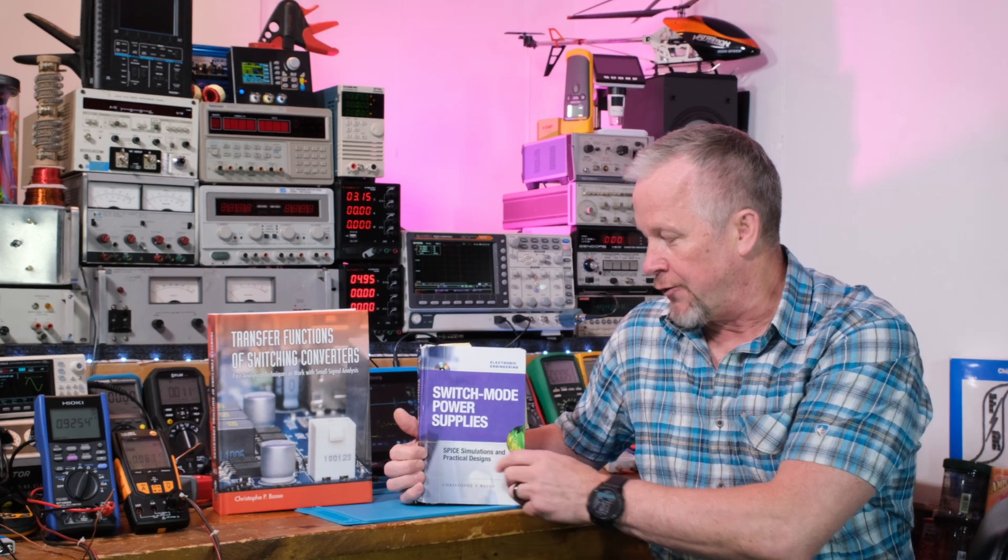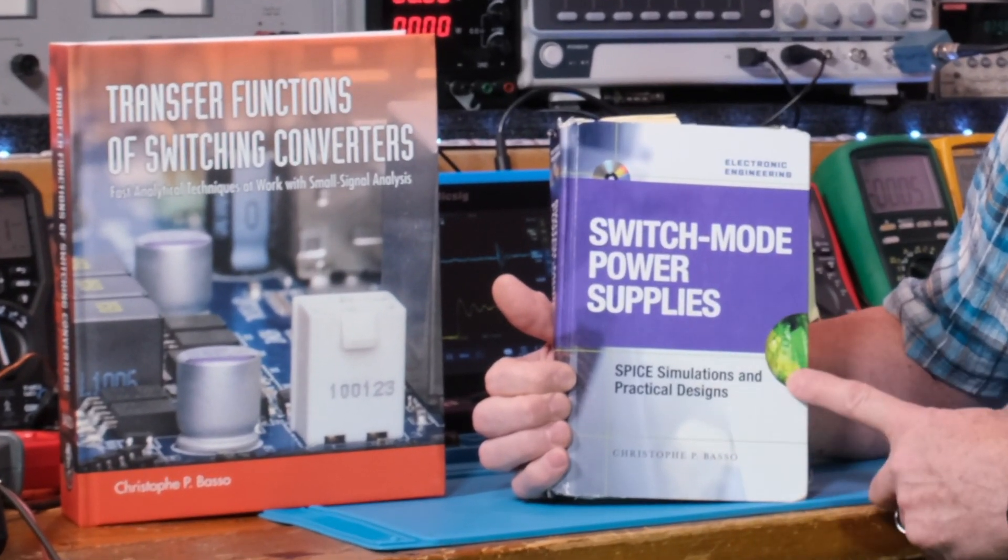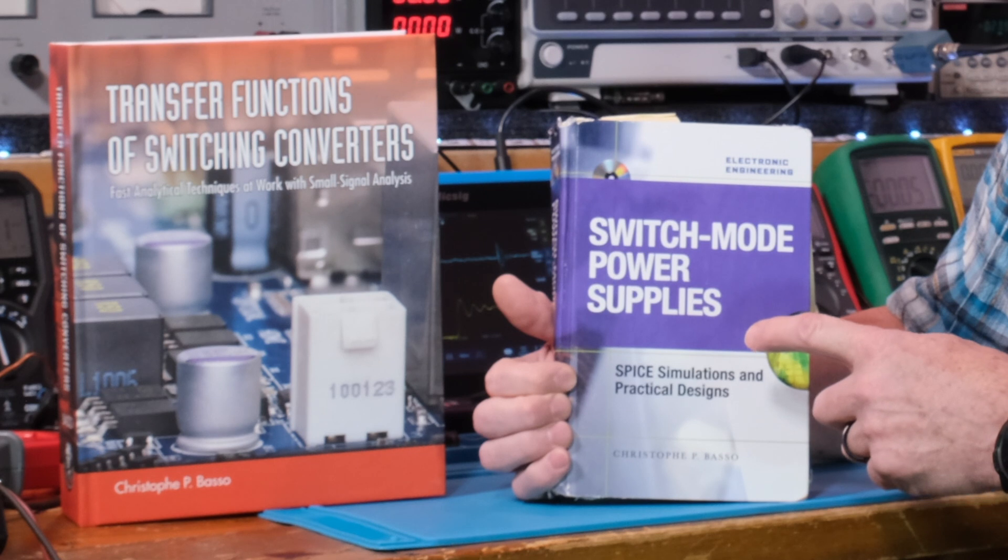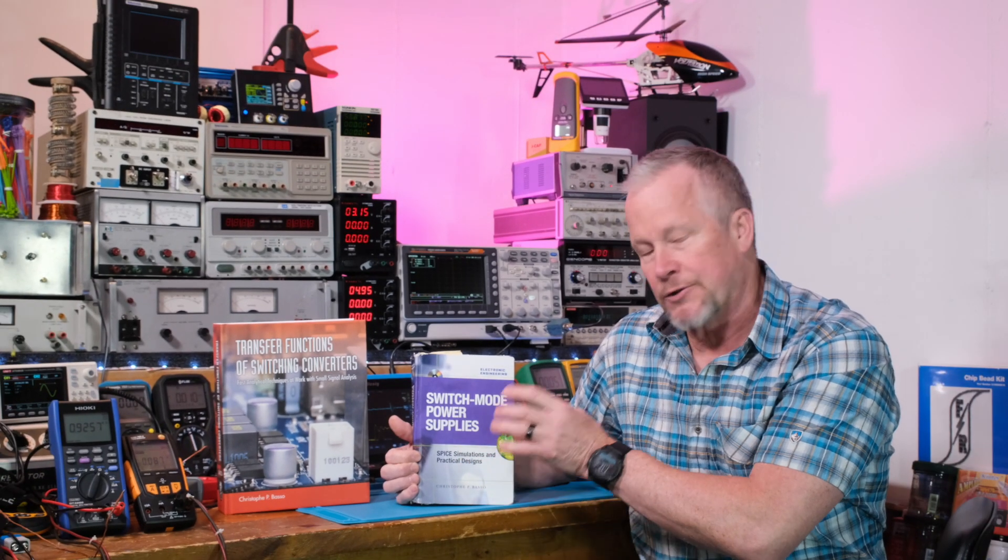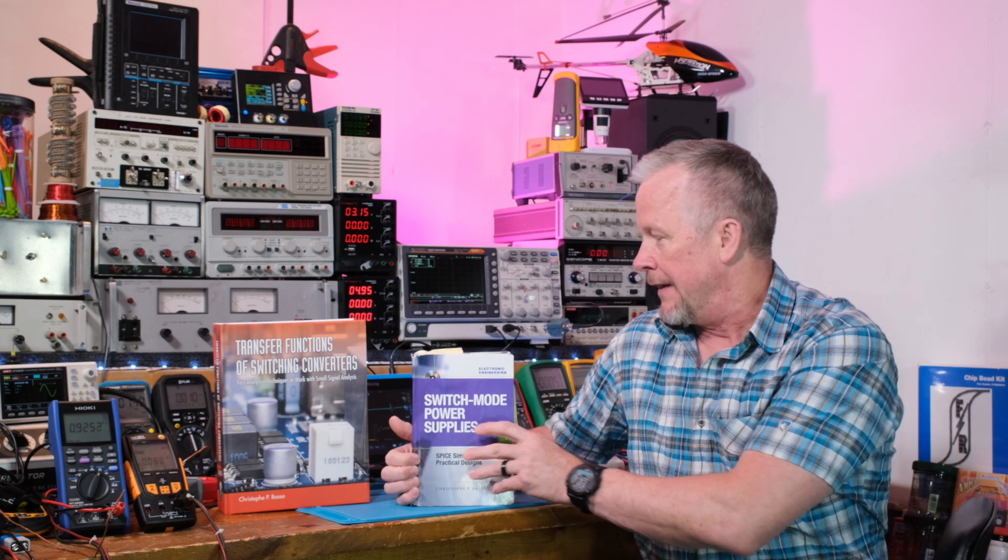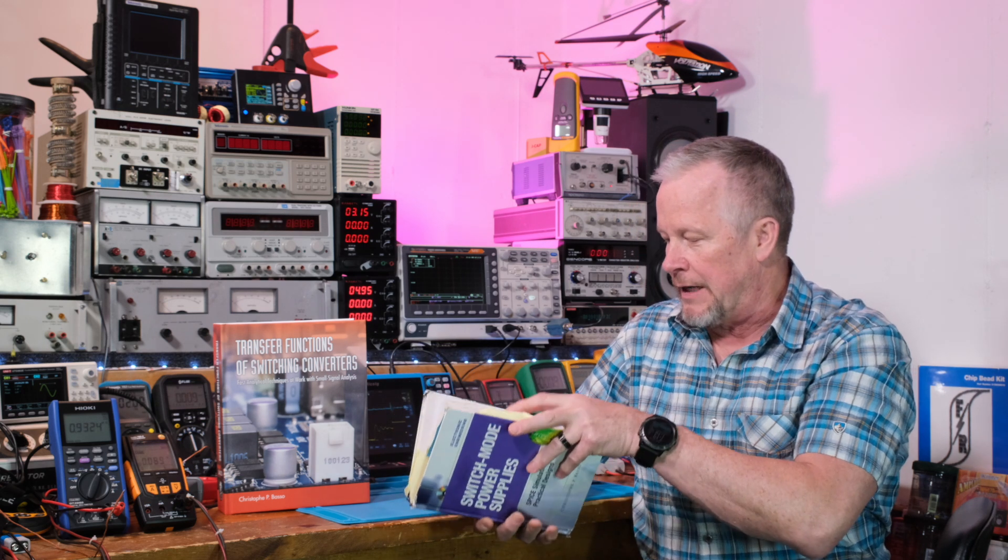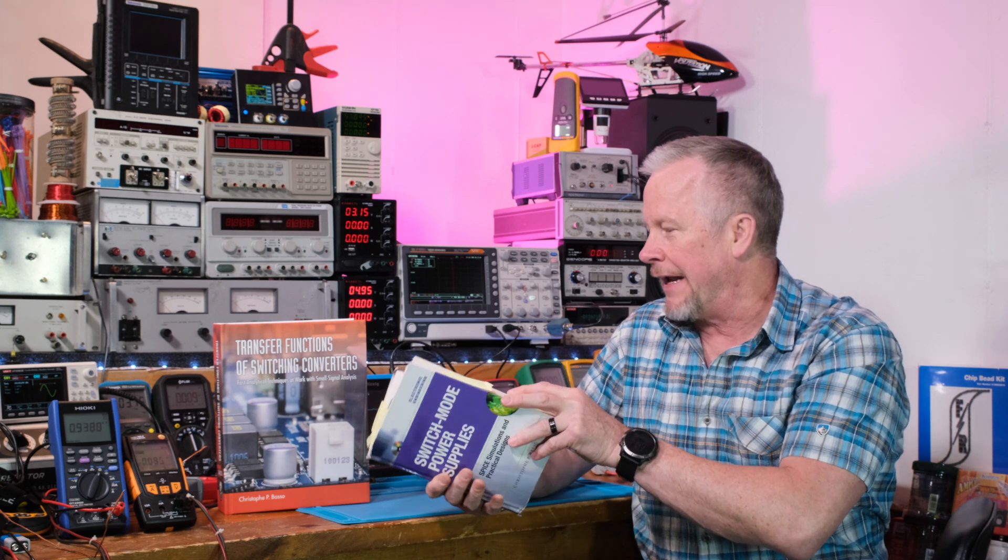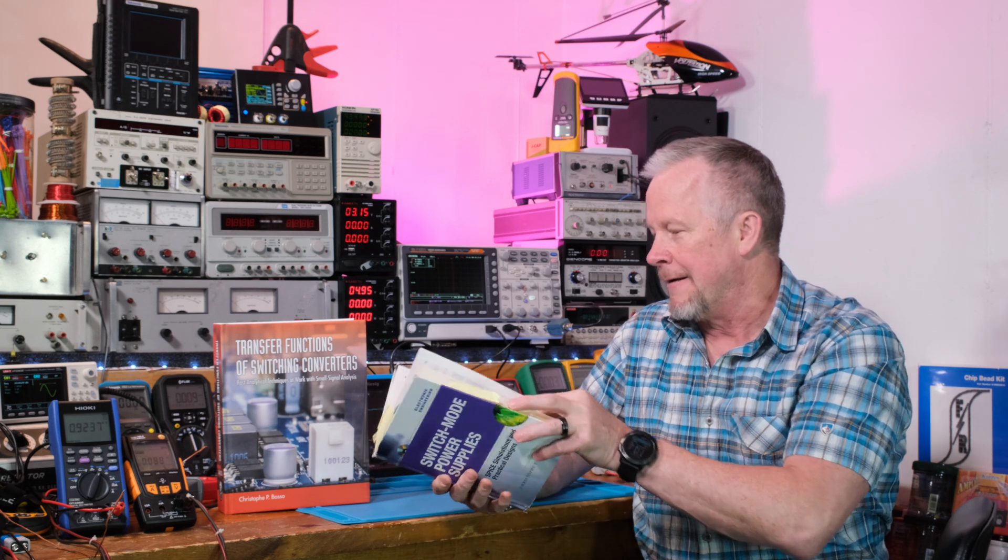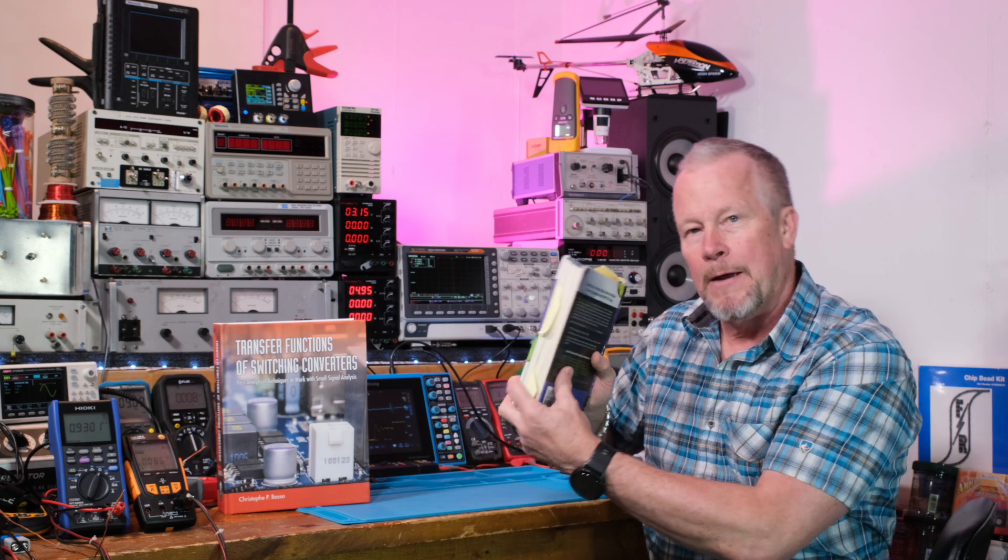I'm holding the first edition of Christoph Basel's Switching Power Supply book. Now, it's the switch mode power supplies with SPICE, but it's really heavily SPICE written. And in the back of the book, which I'm missing, it came with a CD-ROM. This is about 890 pages, I think it is, something like that. But yeah, this is a big, thick book.